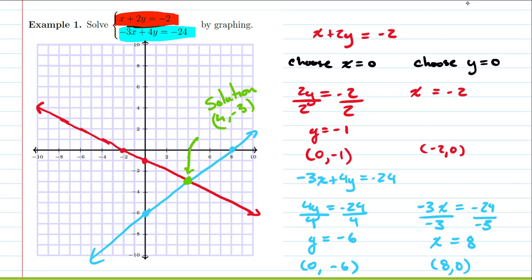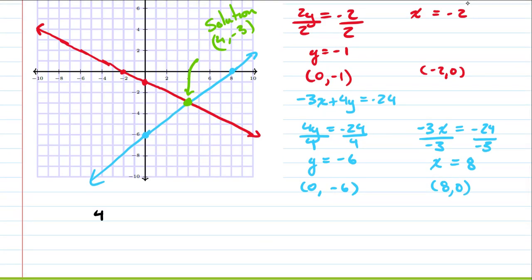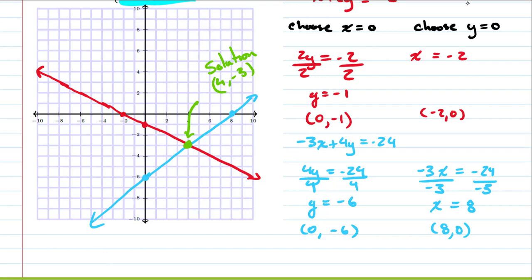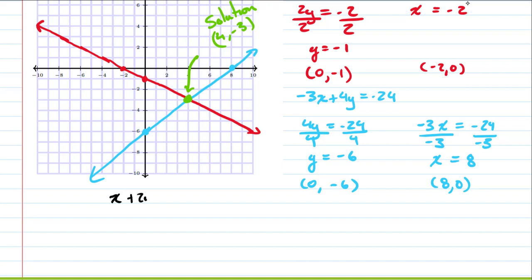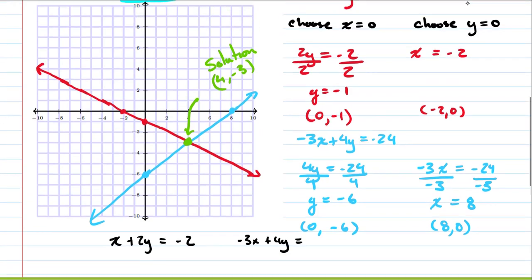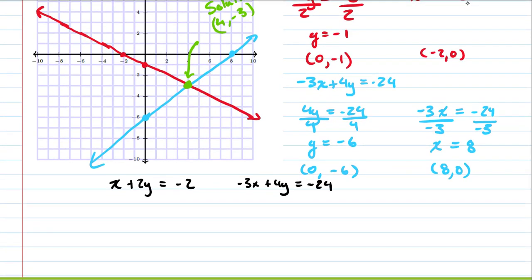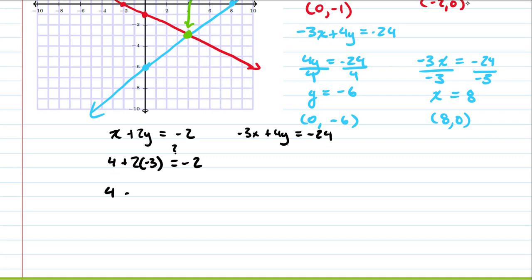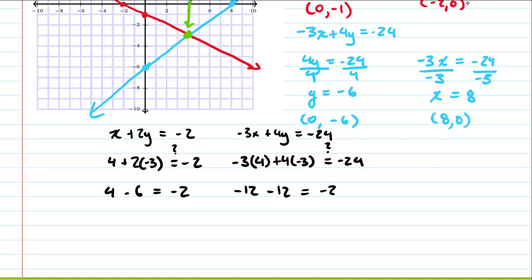We verify by plugging (4, negative 3) into both equations. For the first equation: 4 plus 2 times negative 3 equals 4 minus 6, which indeed equals negative 2. For the second equation: negative 3 times 4 plus 4 times negative 3 equals negative 12 minus 12, which indeed equals negative 24. So we have confirmed our graphical solution.